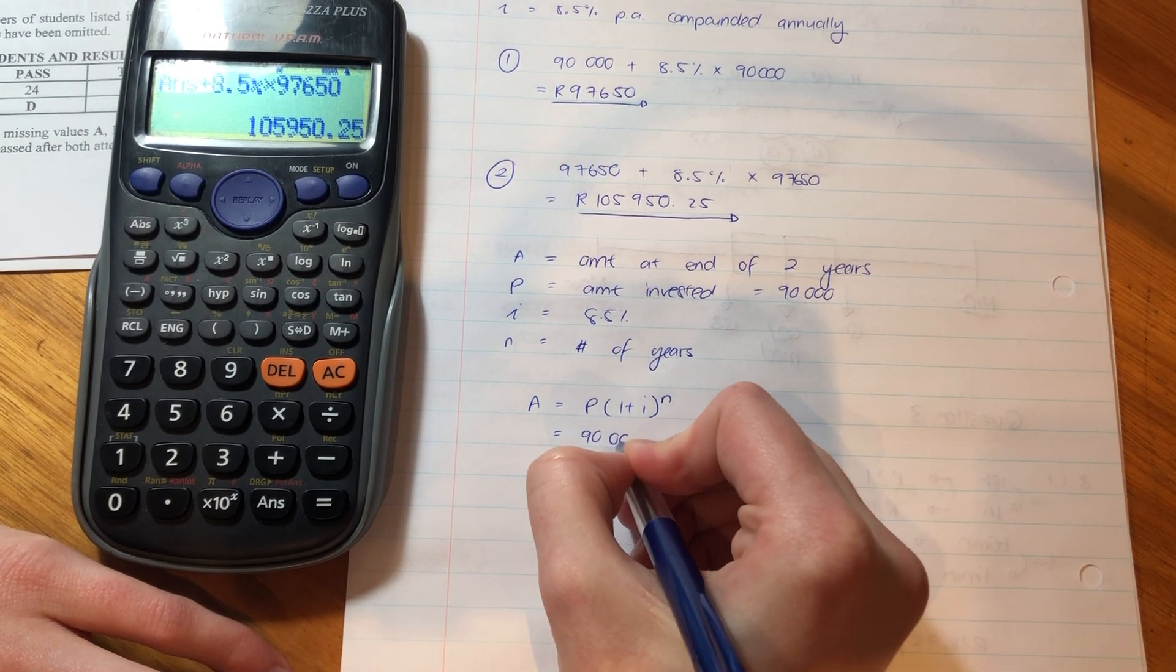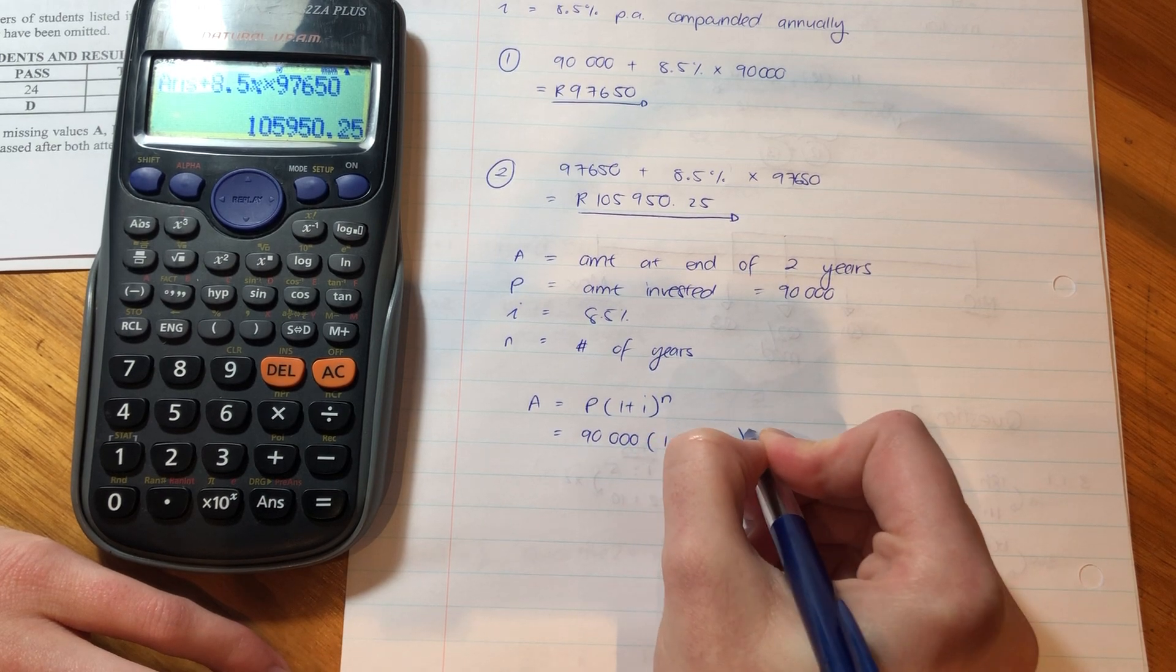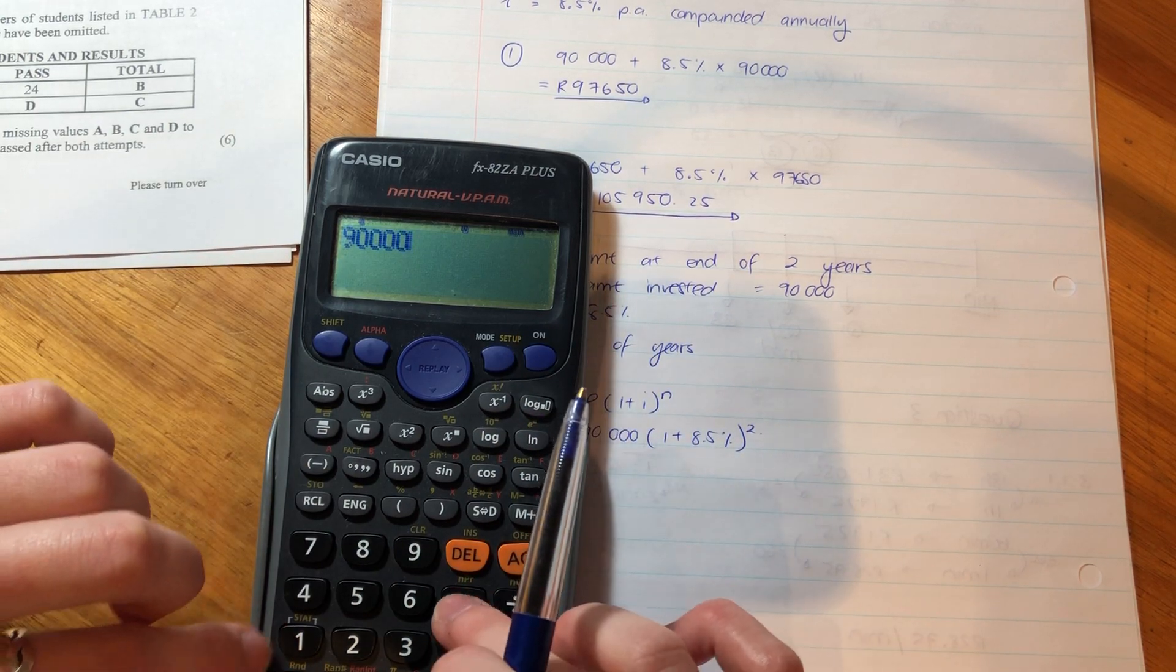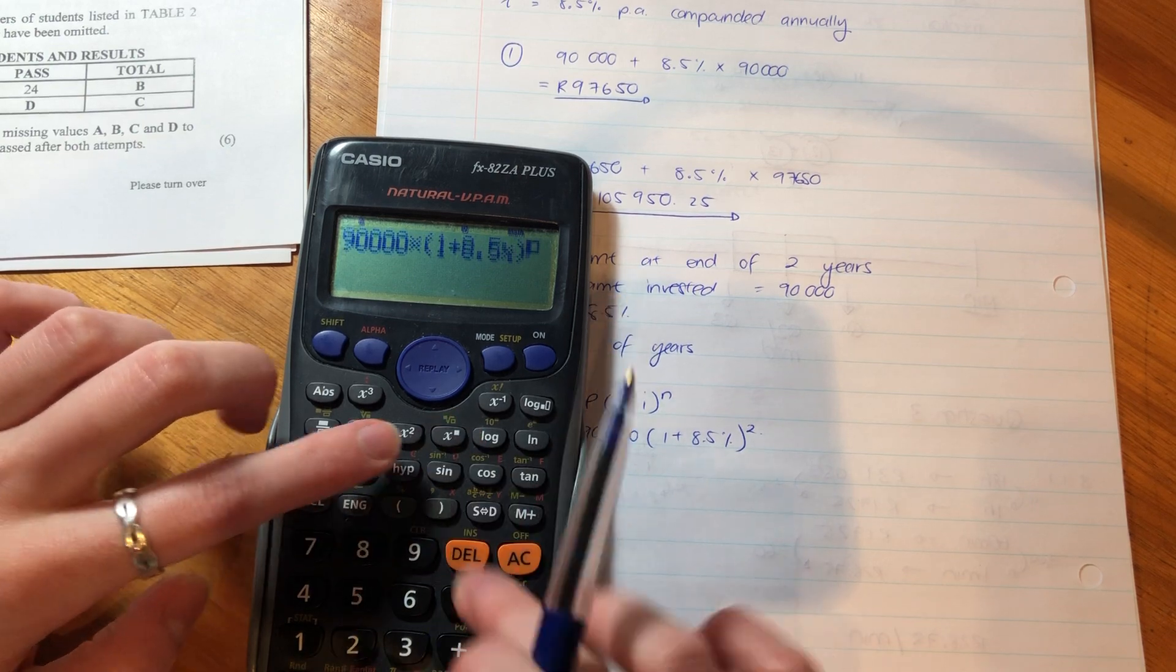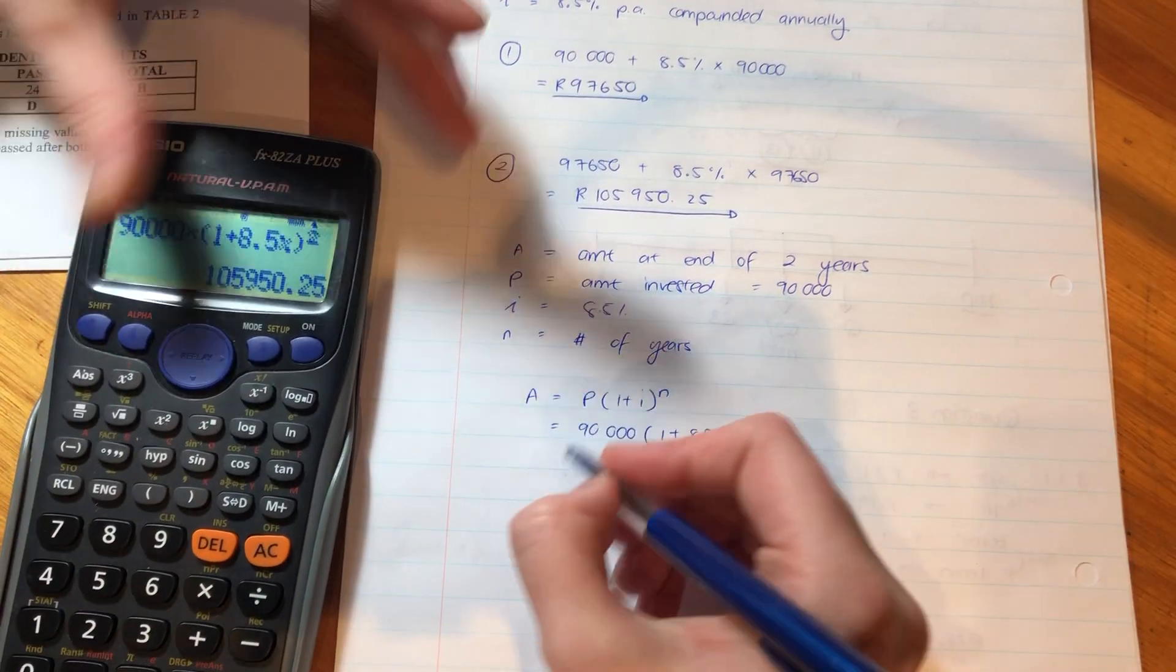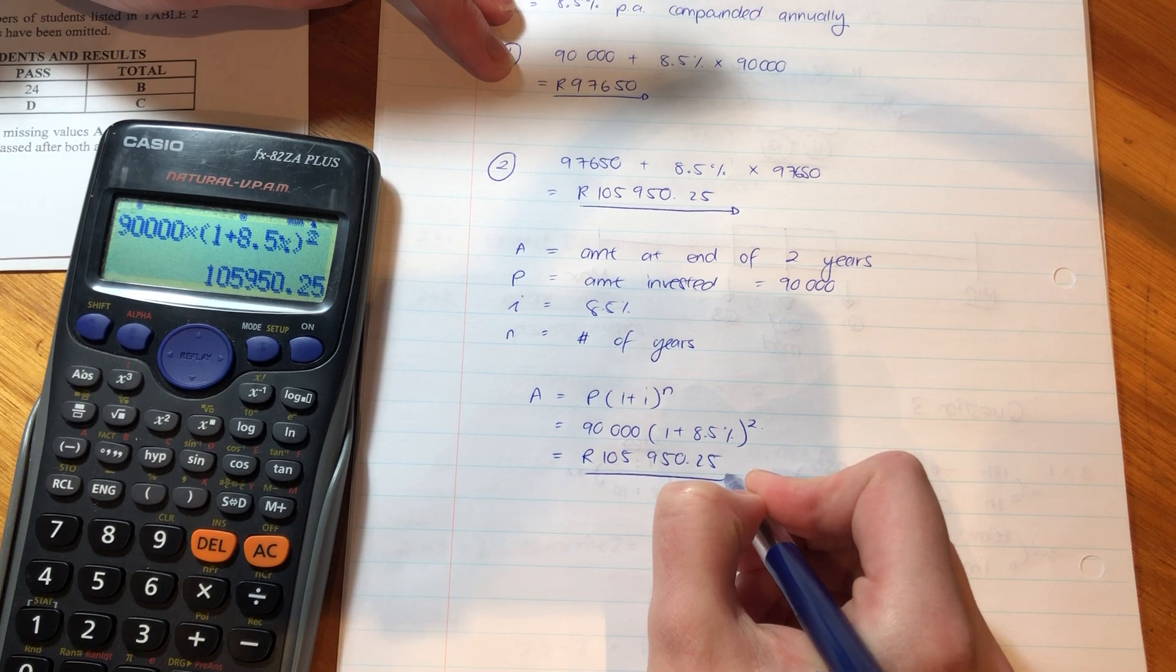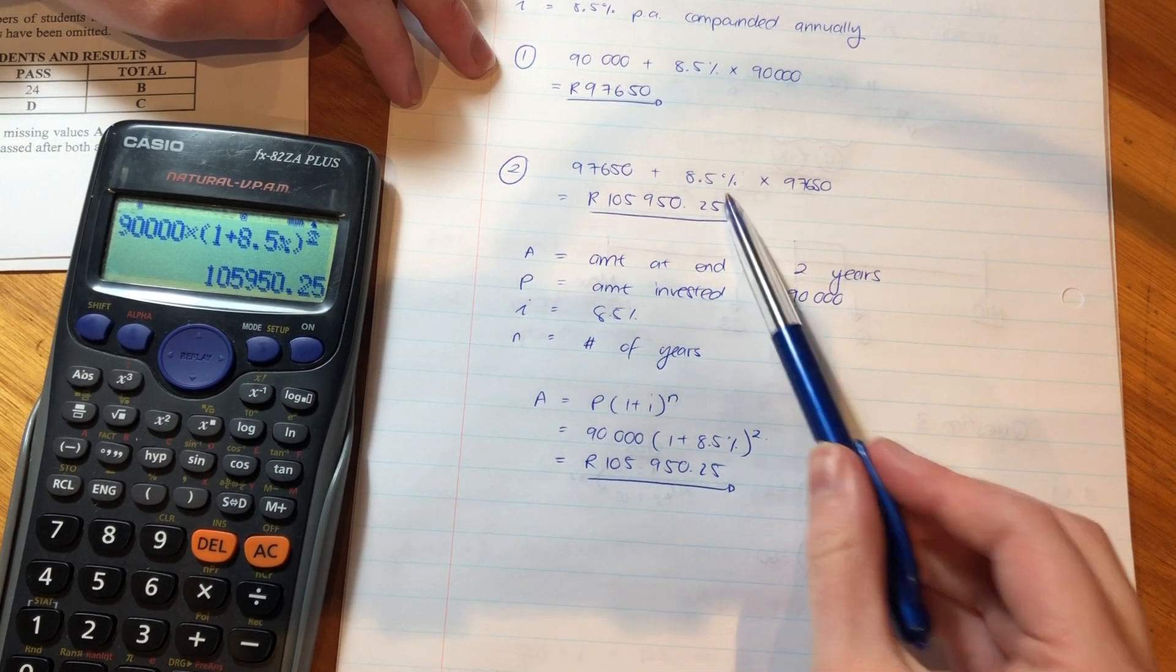So, let's just check that we got the same answer if we do it this way as the way we did it up above. So, if I put this into my calculator. Ta-da! Same answer. So, if you find this confusing, do not use it. I'm just giving you options. But either way, it's the same answer, and that is how much he has.